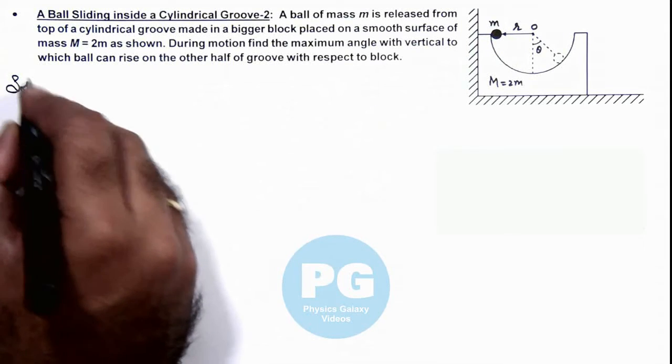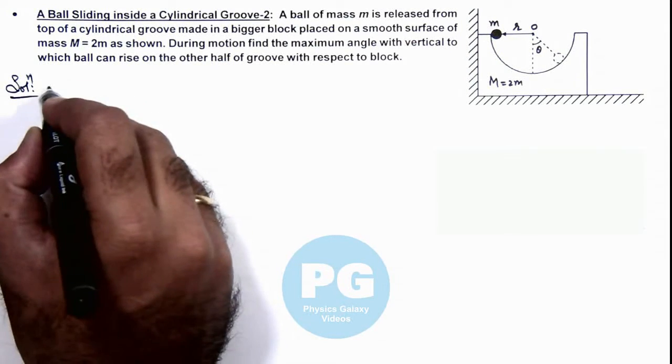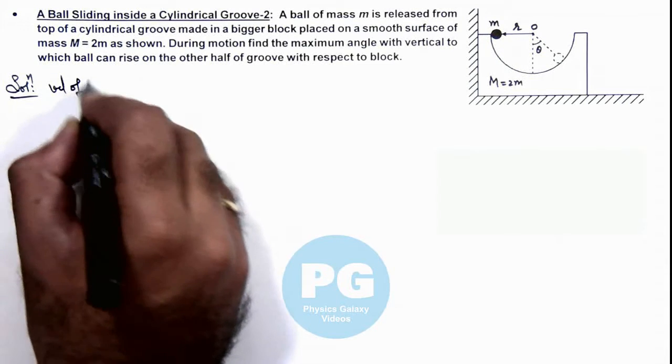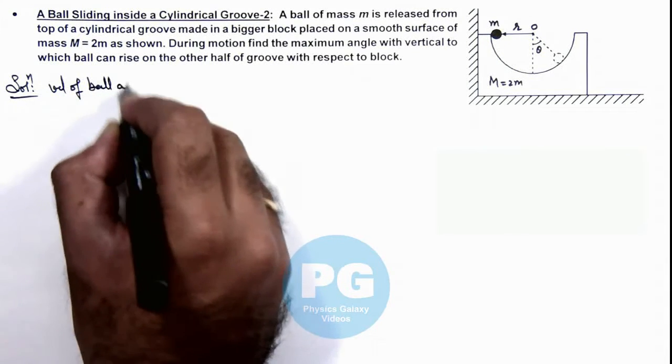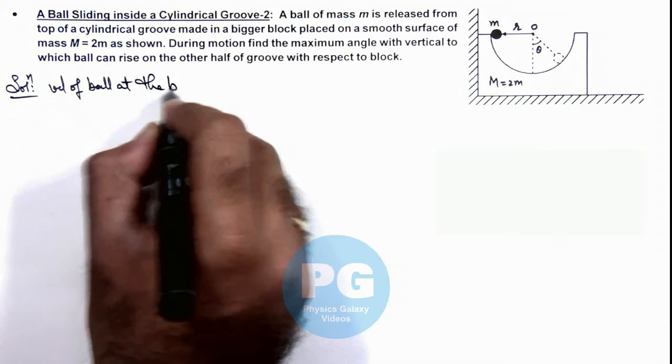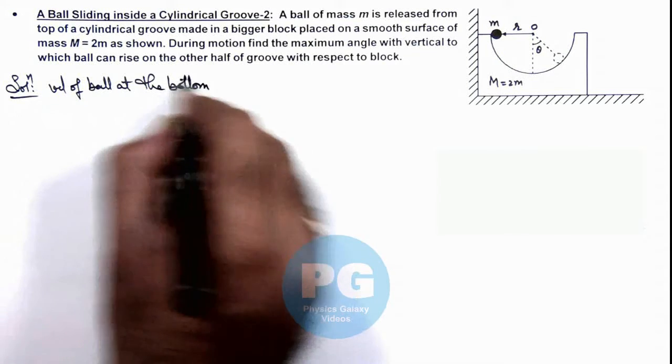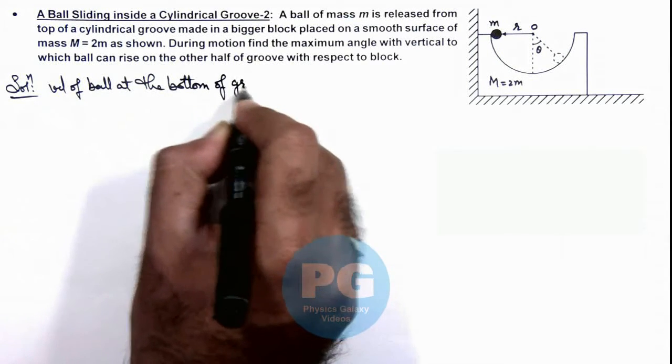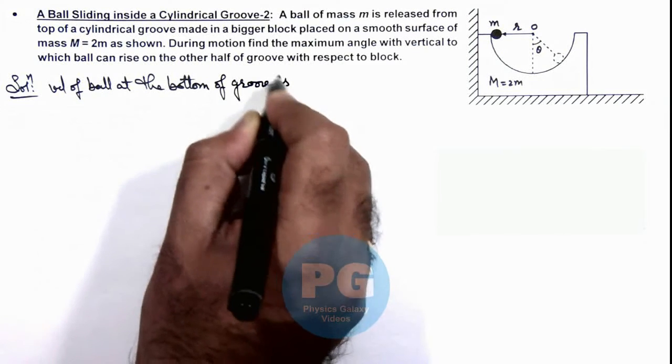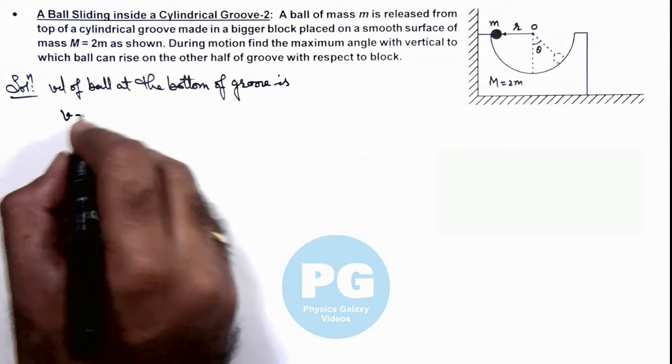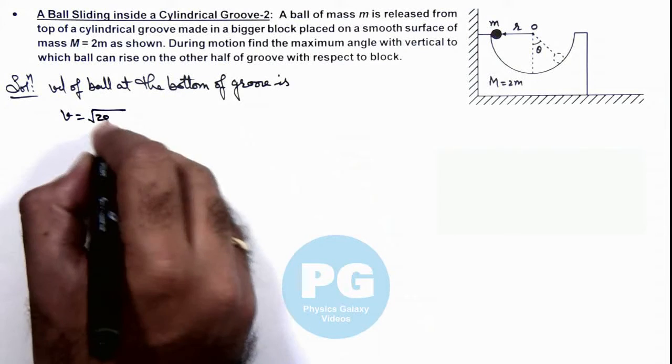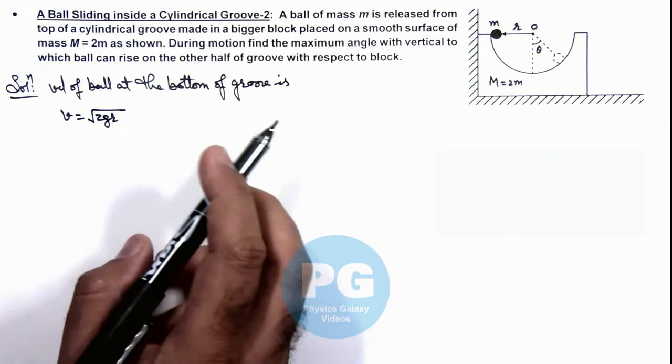Here first we can calculate the velocity of ball at the bottom of groove. This velocity we can simply write as √(2gR), as it has fallen by distance R.